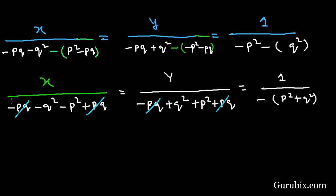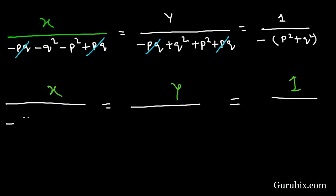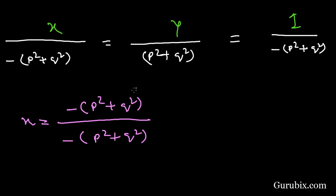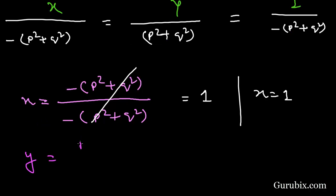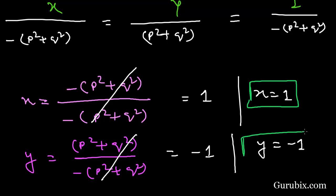We now have x over (value under x) equals y over (value under y) equals 1 over (denominator). We can take common minus from p squared and q squared, giving minus p squared plus q squared. The denominator is also minus p squared plus q squared. To find x: the numerator equals the denominator, so this cancels and x equals 1. To find y: p squared plus q squared over minus p squared plus q squared cancels to minus 1, so y equals minus 1. This is the solution of the question. Thank you.